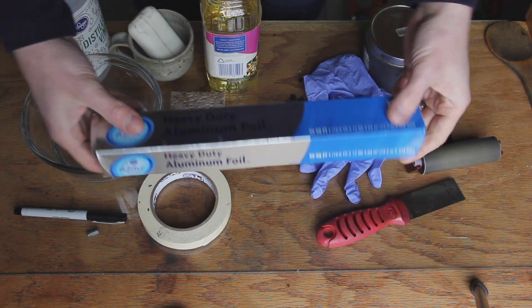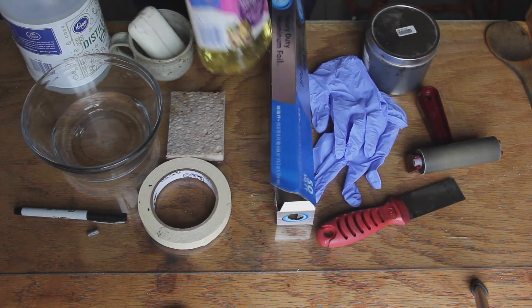Welcome. Today I'm going to be exploring kitchen lithography. Here are the tools you will need. I have some aluminum foil. This is heavy-duty aluminum foil. I recommend that over the thinner stuff.